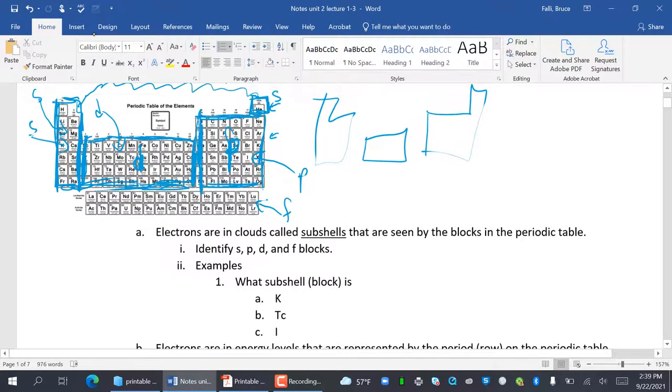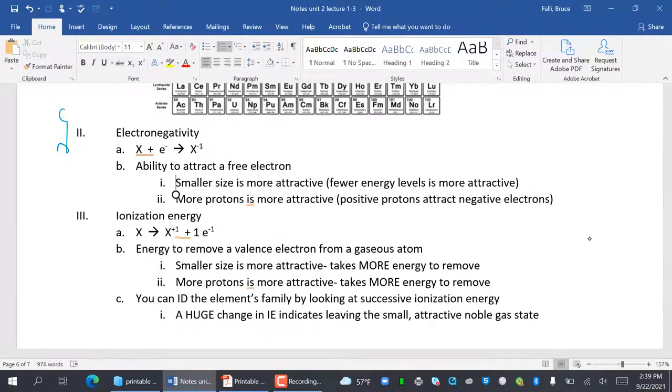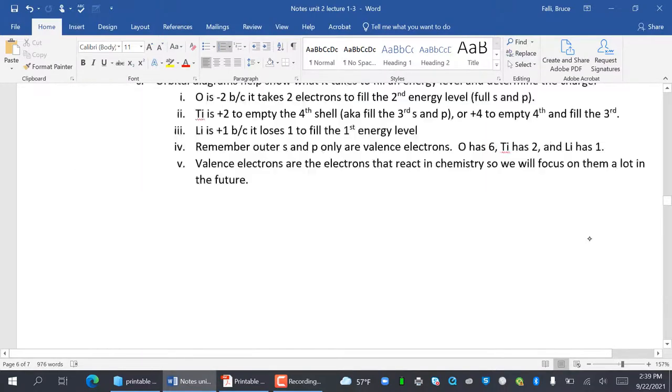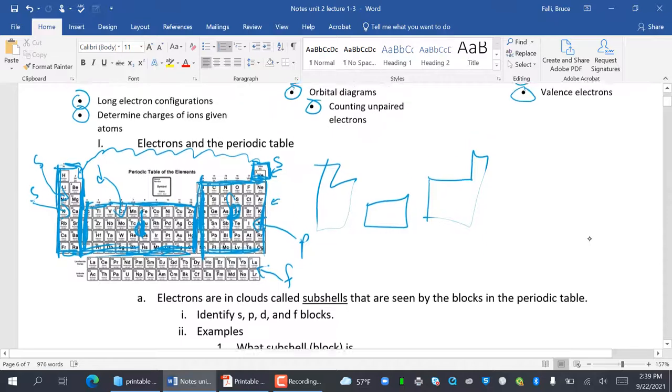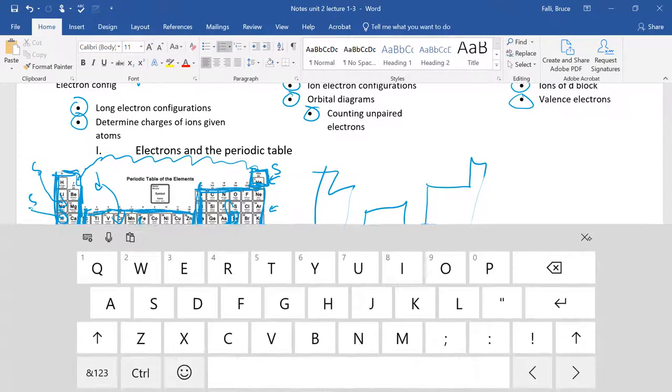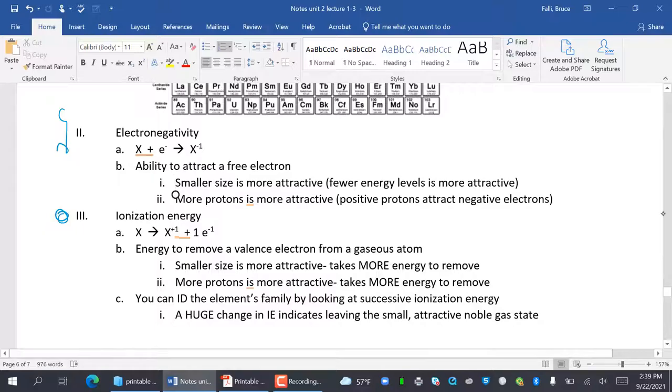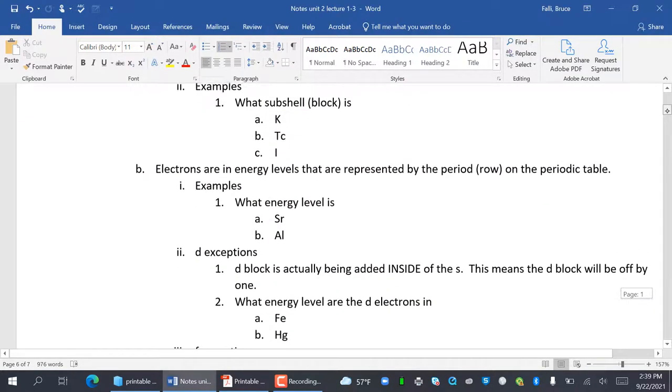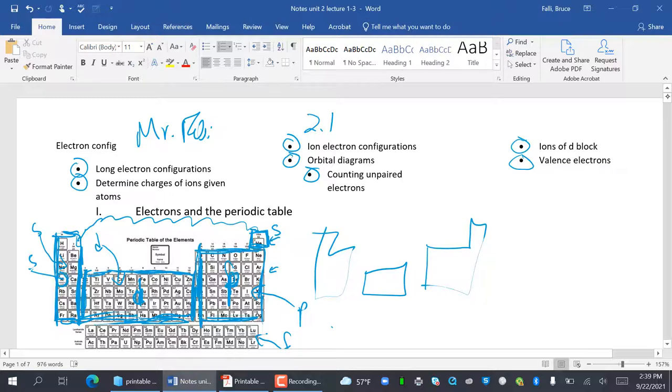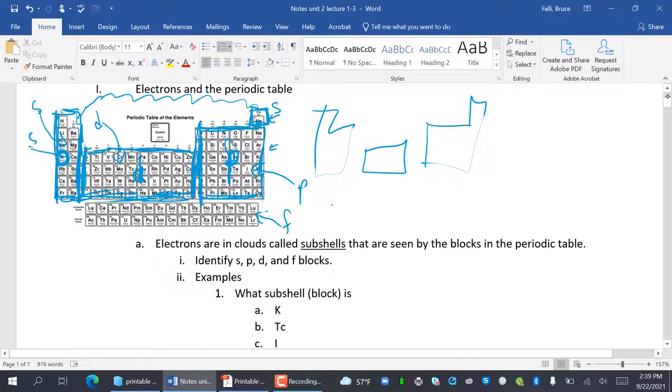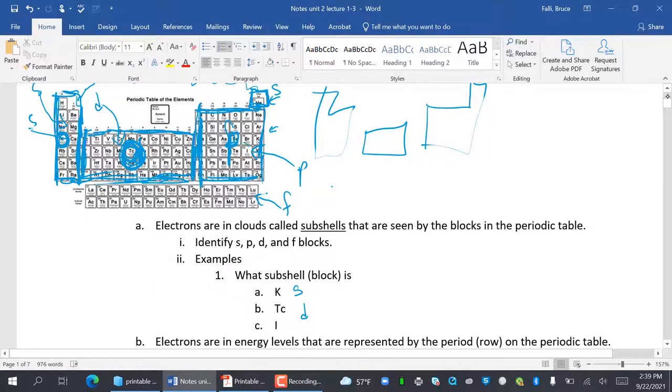What subshell block is K in? K is right here. K is in the S block. TC is technetium. See technetium right here? That's in the D block. Iodine is I, right here. That's the P block.